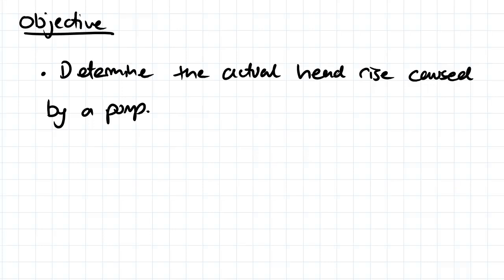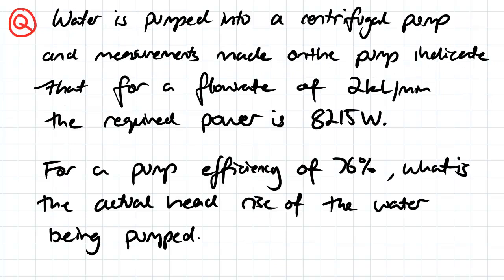The objective for this video is to determine the actual head rise caused by a pump. Water is pumped into a centrifugal pump and measurements indicate that a flow rate of two kilolitres per minute requires a power of 8215 watts for a pump efficiency of 76%.